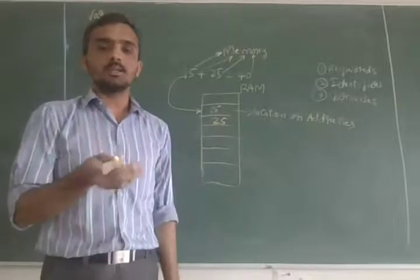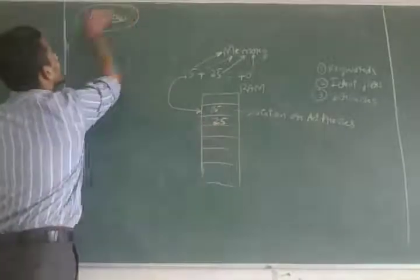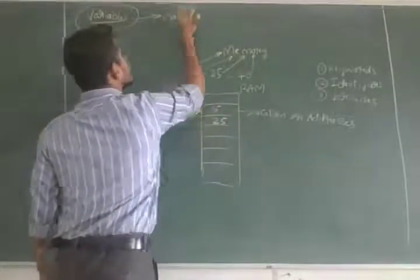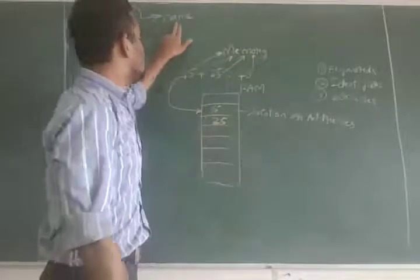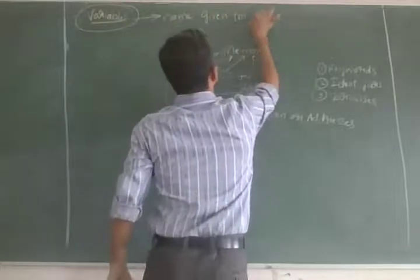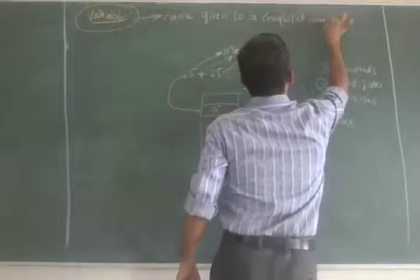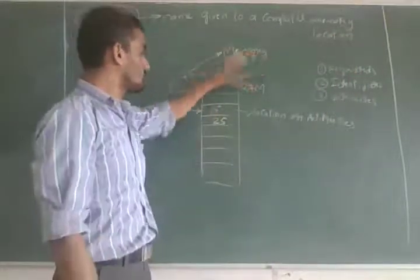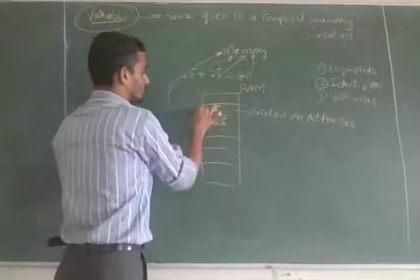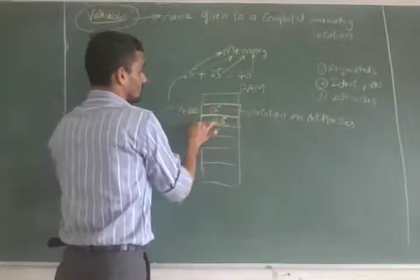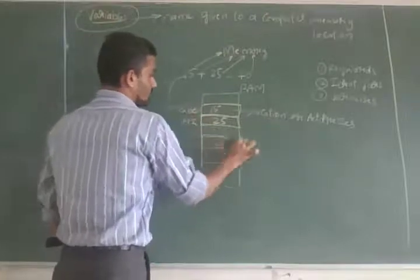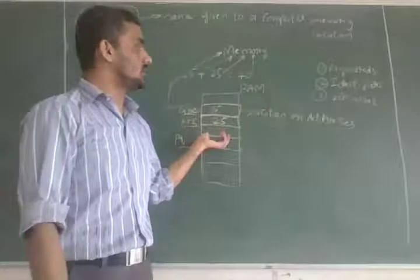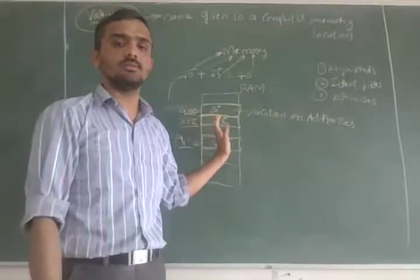A variable is a name given to a computer memory location. For example, for one memory location I give the name 'abc,' for another 'xyz,' for another 'pqr.' So a variable is the name given to the memory location where a value is stored. We'll discuss variables in detail in the next class.